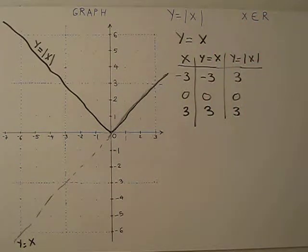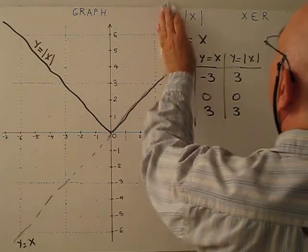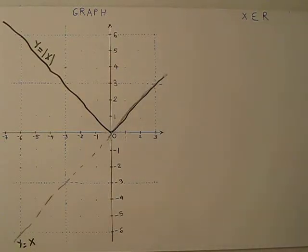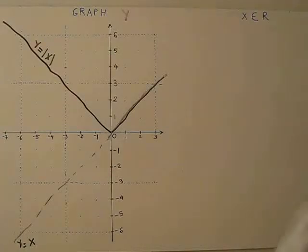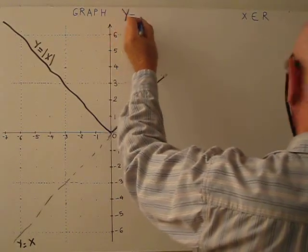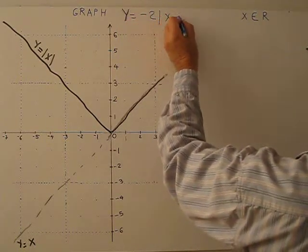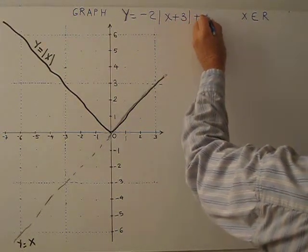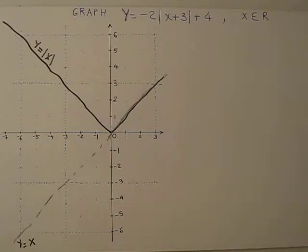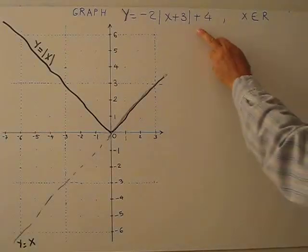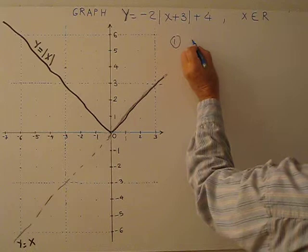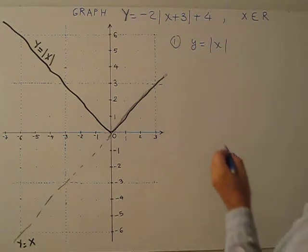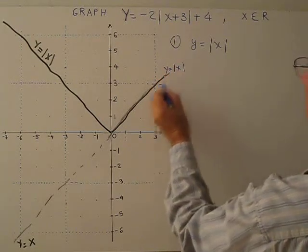After this basic graphing, I'm going to explain a more complicated one. Graph Y equals negative 2 times absolute value of X plus 3, plus 4, for all real X. We'll graph this step by step. Step 1: graph Y equals absolute value of X — we've already done this.